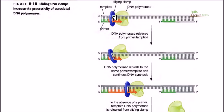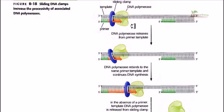Welcome again. In this video we are going to talk about DNA processivity and the importance of two different proteins called the sliding clamp and clamp loader proteins in the case of DNA polymerase and their role in the DNA replication process. First, let's talk about DNA processivity. DNA processivity is defined as the number of nucleotides added before the falling off of DNA polymerase from the DNA segment.